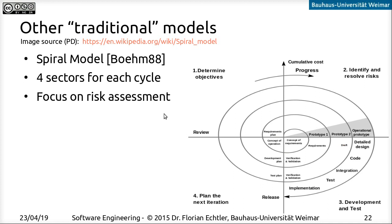The spiral model is also quite similar, with a focus on risk assessment. It has four sectors: determining objectives, identifying risks, actual development, and planning for the next iteration. Each iteration of the spiral adds another chunk of functionality — from concept to requirements plan, first prototype, second prototype, operational prototype, and then done. However, this model doesn't focus much on what comes after release — maintenance is not well addressed, which is unfortunate.